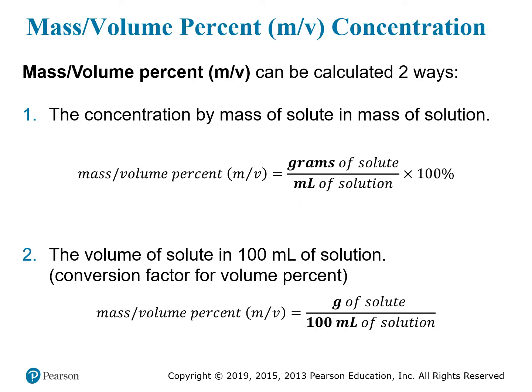The next one is a combination: the mass-to-volume percent, or m/v percent concentration. This is a little unusual because you don't have the same units in numerator and denominator, so they don't cancel out and you can't get a pure percentage. You must use the convention of grams of solute in milliliters of solution — specifically grams for mass and milliliters for volume — then multiply by 100 to get your percentage.